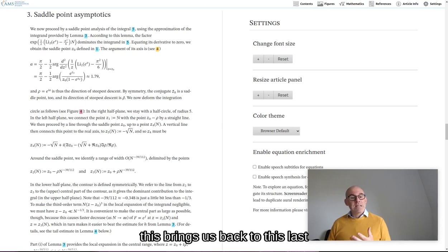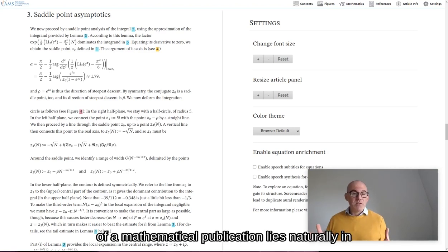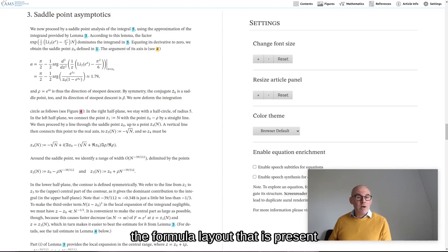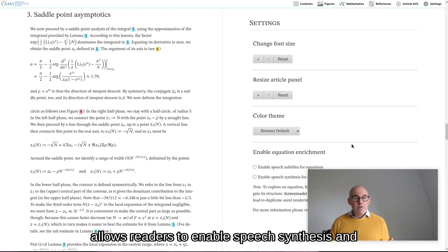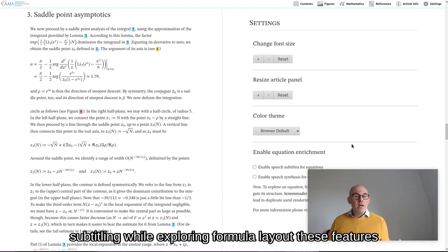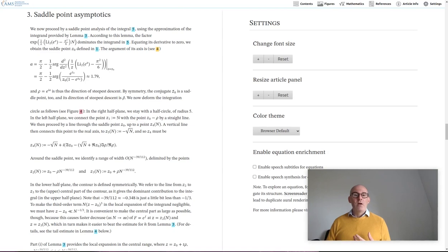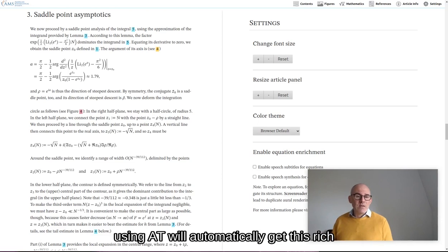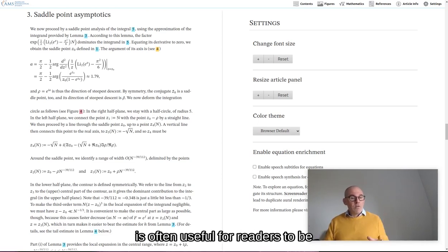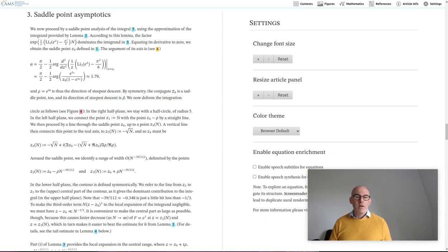This brings us back to this last section of the settings panels. One of the biggest challenges of accessibility of a mathematical publication lies naturally in the formula layout that is present. Now, in short, this last group of settings allows readers to enable speech synthesis and subtitling while exploring formula layout. These features are not actually meant directly or primarily for users of assistive technologies. Instead, readers using AT will automatically get this rich information with their preferred tools. However, it is often useful for readers to be able to actually get this additional information from the rich markup.